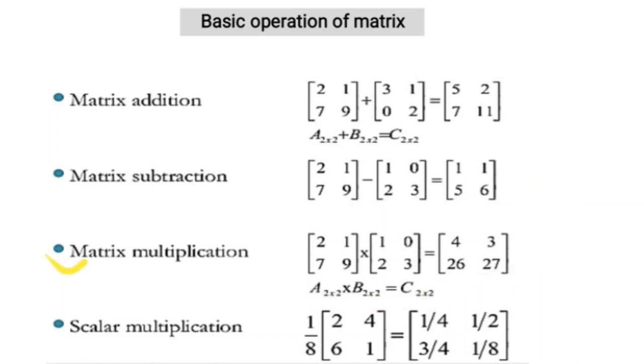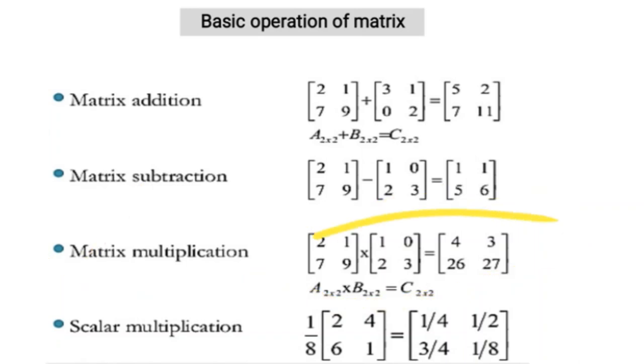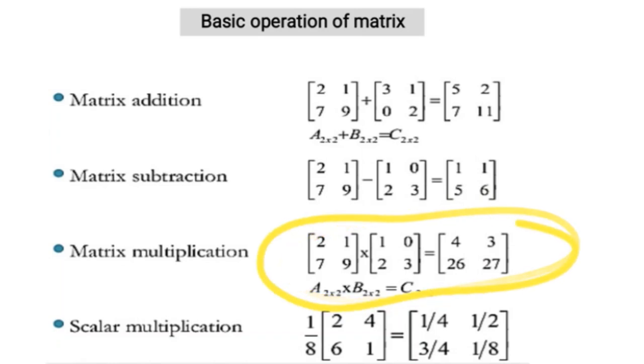Since a 2×2 square matrix is given, you can perform this matrix multiplication using the dot product.